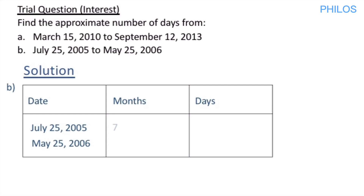The base is always the starting year, which is 2005. So we check from January 2005 to May 2006 — how many months? The entire year of 2005 is 12 months, and then entering 2006 up to May gives 5 extra months. So 12 + 5 = 17 months. The day for May is 25, so we write 25 under days.